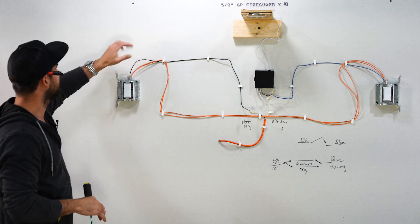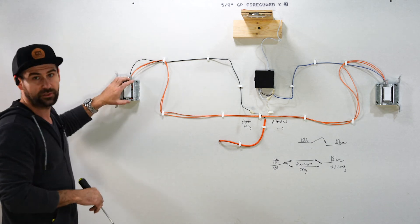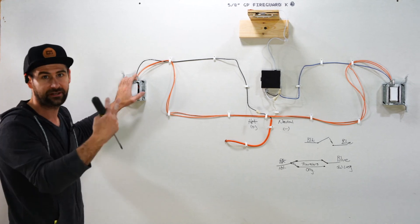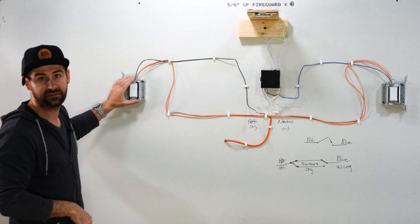Then on one side of the circuit, in one switch box, you're going to have the hot. That's the positive. It comes from the electrical panel. That gets tied to one of these switches.